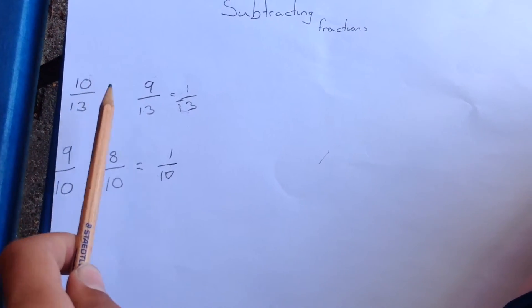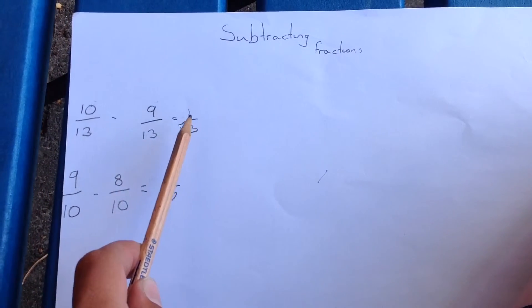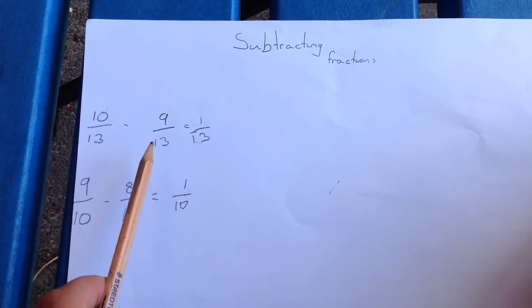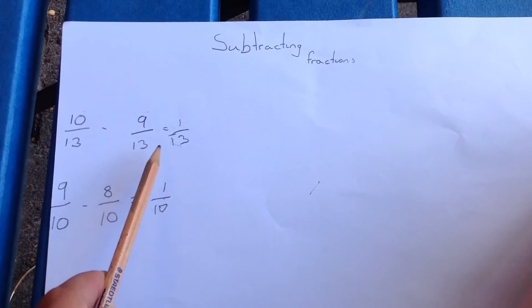The two top numbers, the 10 and the 9, you take away from each other. This would equal 1. The two bottom numbers, the 13 and the 13, you leave as they are.